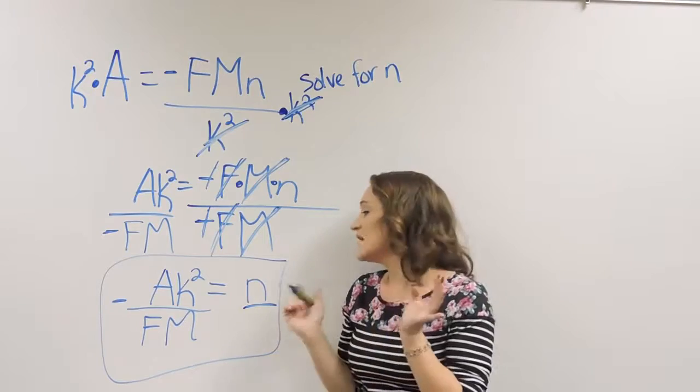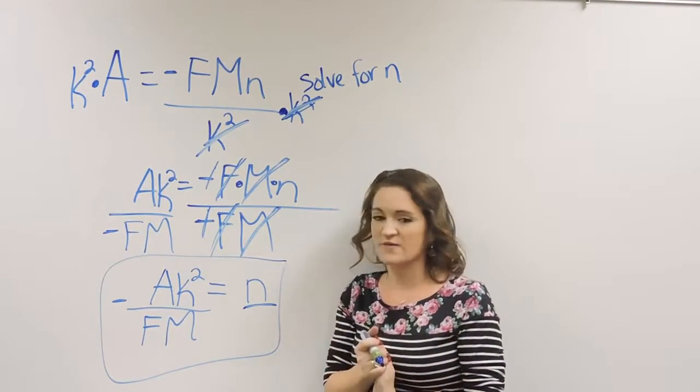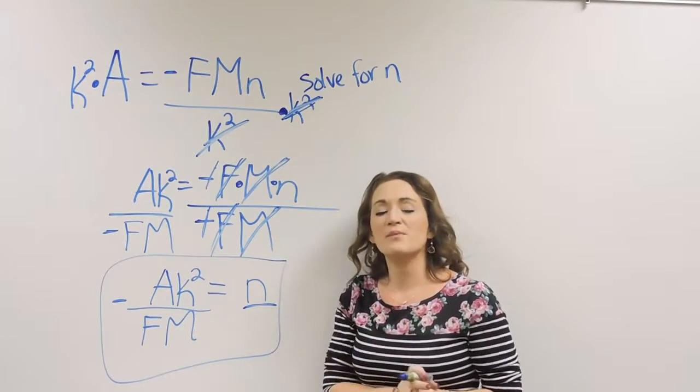So just pretend that this is just a regular equation. How would you get that specific variable by itself? Remembering to do the opposite of what you have going on.